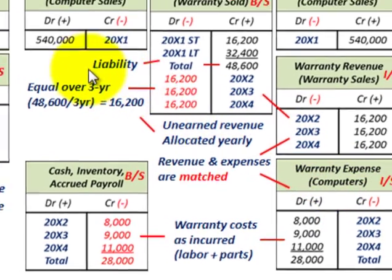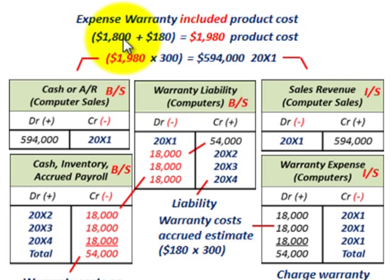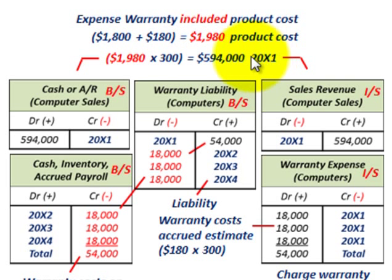Now let's look briefly at the expense warranty approach, where the warranty is included in the product cost. Using the same example, the product cost is $1,800 for the computer plus the $180 warranty included, giving a total of $1,980 per unit. At $1,980 times 300 computers, we have $594,000 worth of product sold in 20x1.